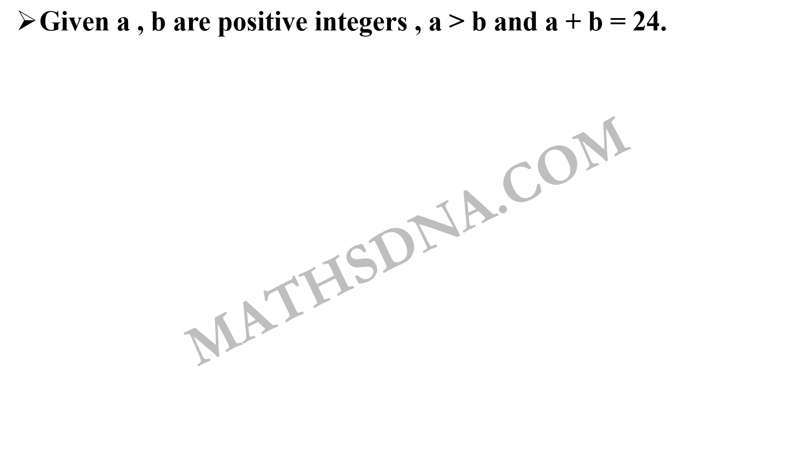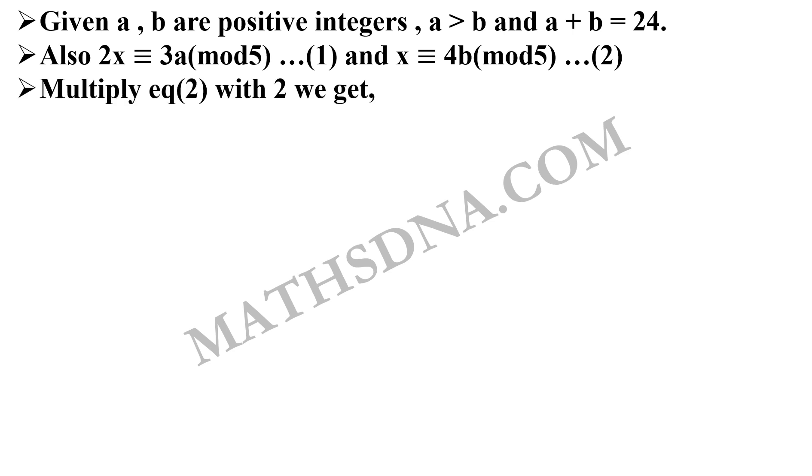Three informations, as well as the congruences, that is, 2x is congruent to 3a mod 5, and x is congruent to 4b mod 5. We multiply equation 2 with 2 that gives us 2x is congruent to 8b mod 5. And as we are dealing with mod 5, it becomes 2x is congruent to 3b mod 5. Give this equation number 3.